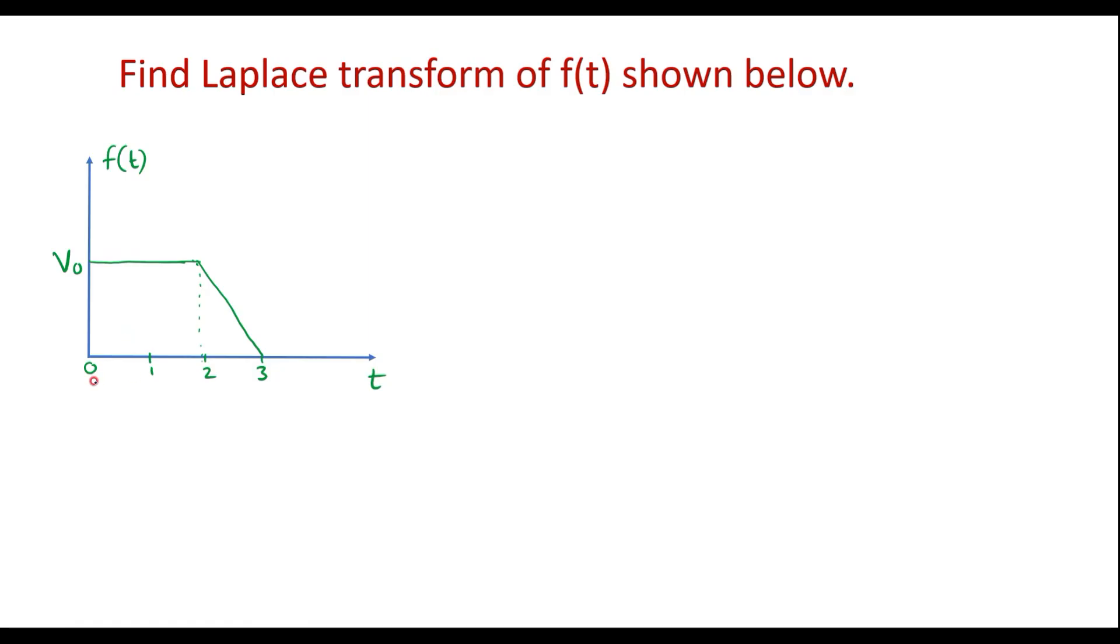Here we can see that for t 0 to 2, there is a step signal having amplitude v0. From 2 to 3, there is a falling ramp signal.